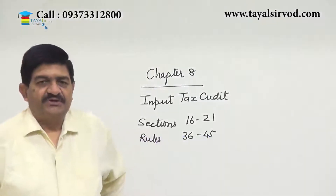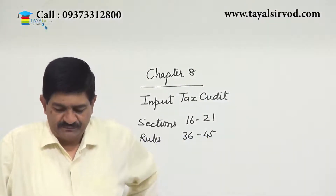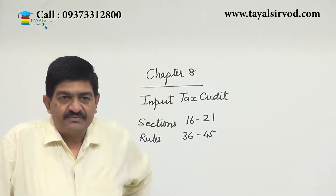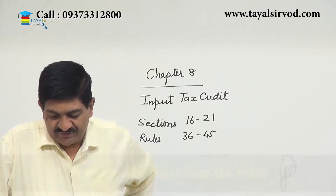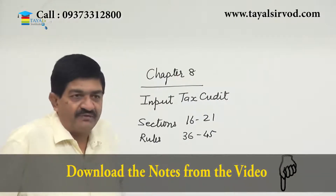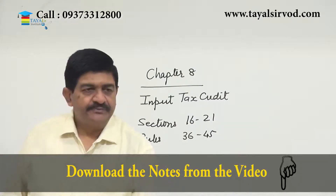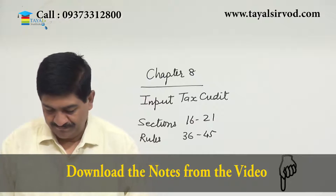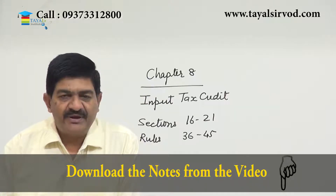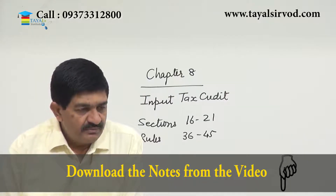Now the new chapter — chapter number eight: Input Tax Credit. The coverage in this chapter is section 16 to section 21, and the rules are from rule number 36 to 45. This is the most important chapter for GST; in fact, the entire law is based on this chapter only.